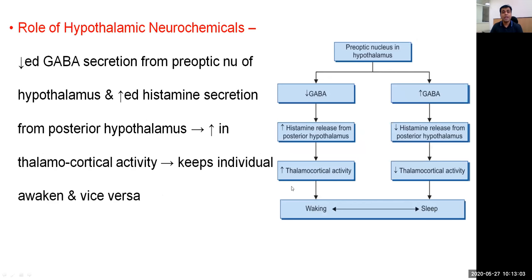Regarding hypothalamic neurochemicals: decreased GABA secretion from the preoptic nucleus of the hypothalamus and increased histamine secretion from the posterior hypothalamus together increase thalamocortical activity, causing a state of alert wakefulness. Conversely, increased GABA and decreased histamine release from the posterior hypothalamus inhibit thalamocortical activity and are responsible for induction of sleep.